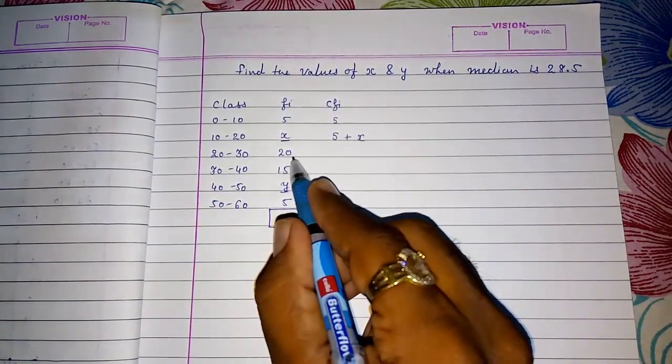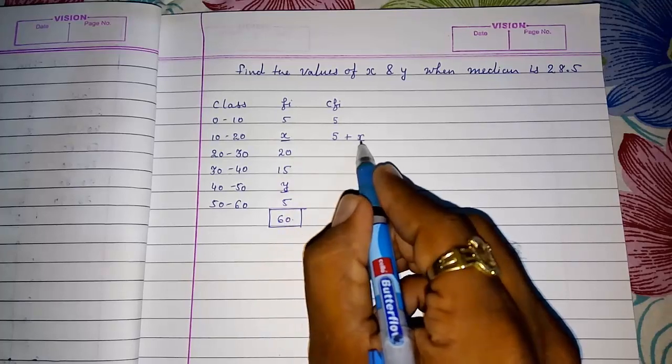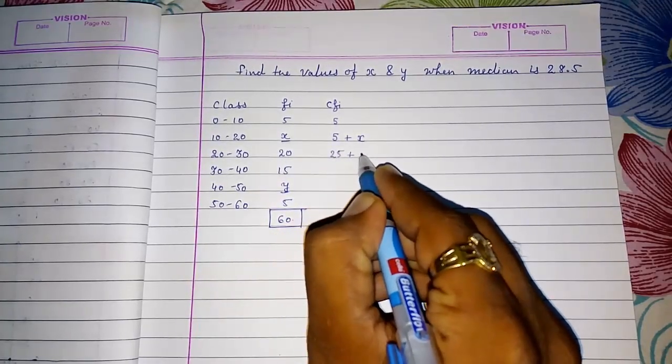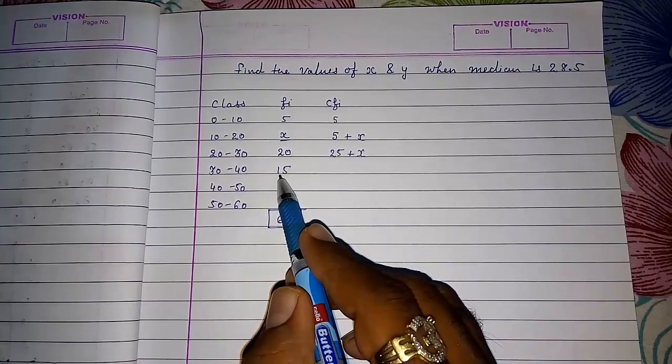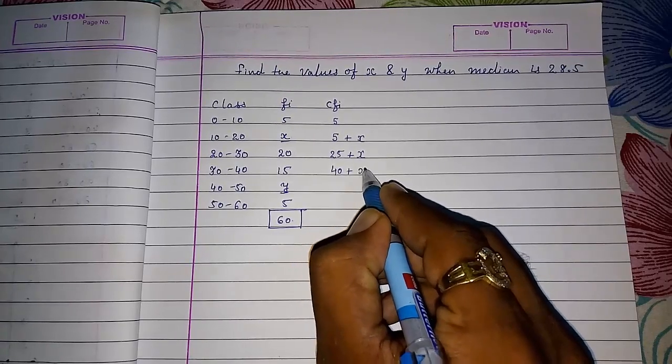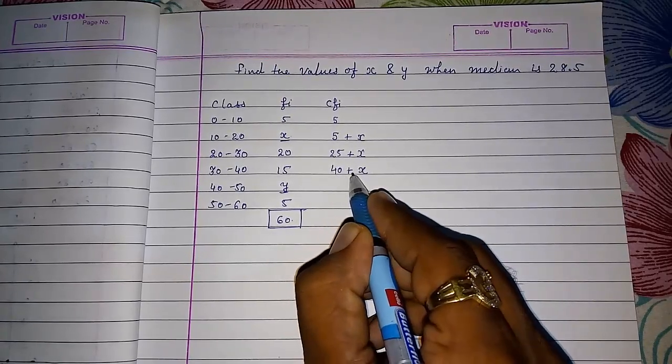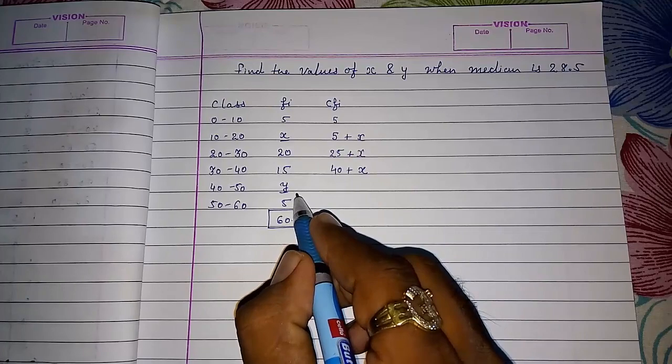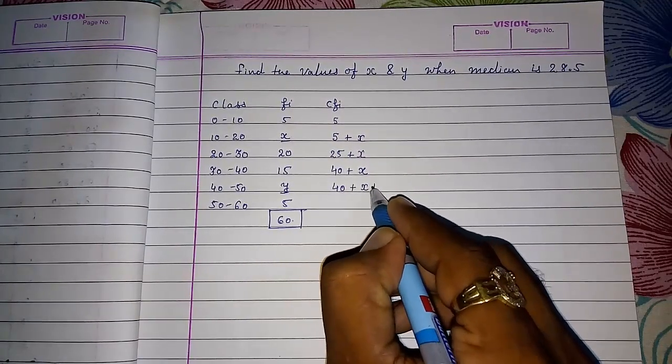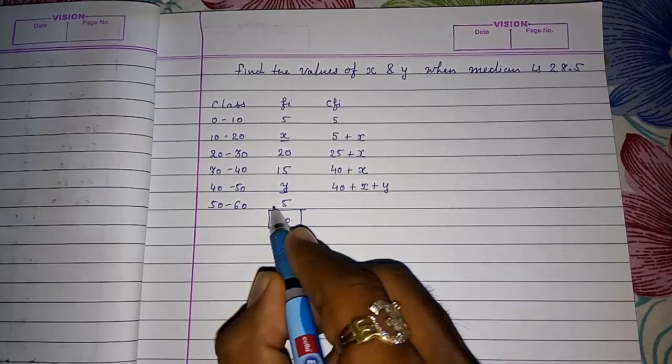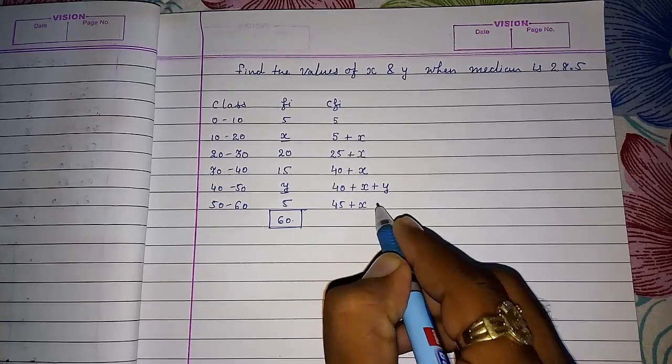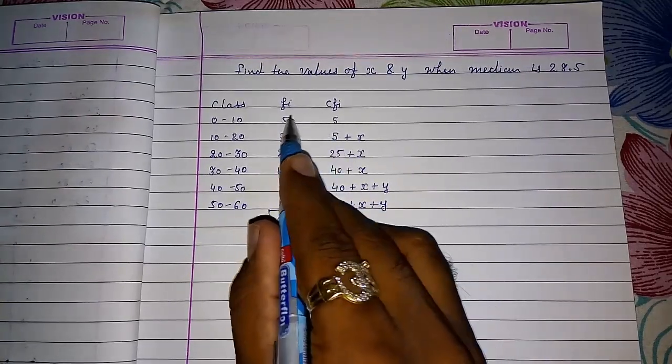Then 5 plus 20. 5 plus X plus 20, so it will be 25 plus X. 25 plus 15 means 40 plus X. Then 40 plus 5, 45 plus X plus Y.